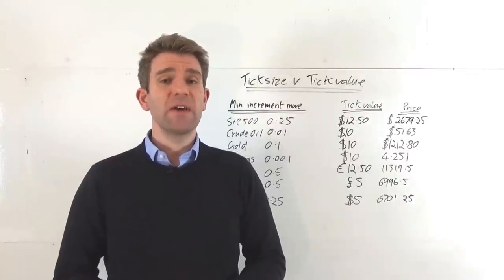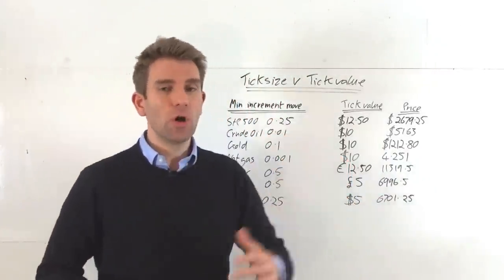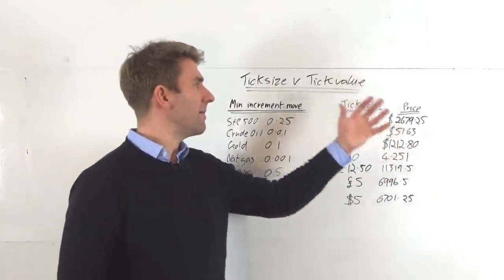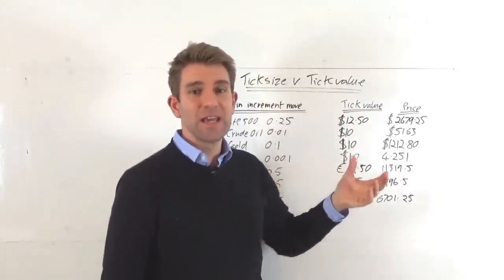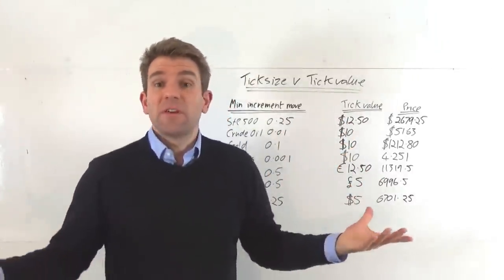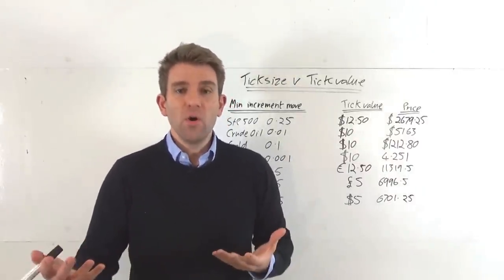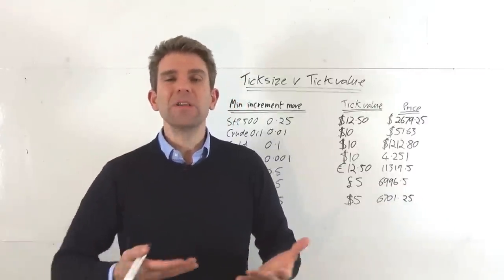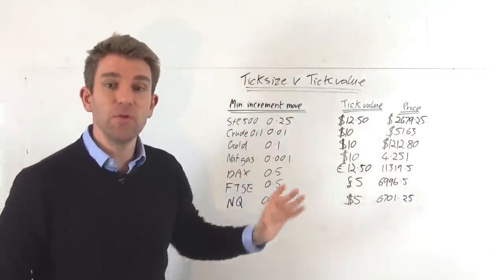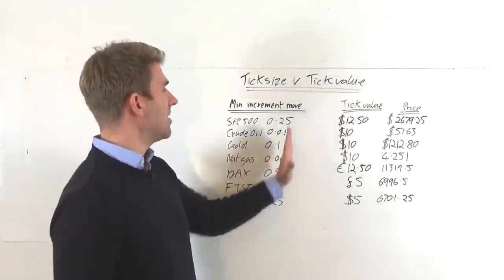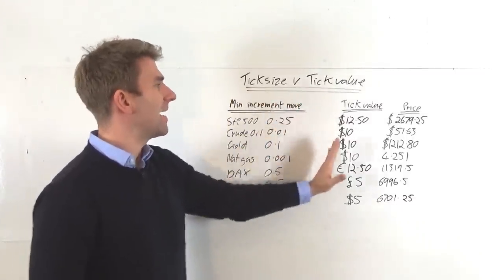This one's for you futures traders out there — day traders, swing traders, doesn't really matter. When we're trading a futures contract, there's sometimes a little bit of ambiguity between tick size and tick value. They're two distinct different things. As a beginner you can get it wrong, because when you're starting out you could trade the contract, look at the contract, see what one contract is worth, and not really know what happens when it moves one increment. This isn't really a deep dive into futures per se — this is more of an explainer between the minimum increment move, which is our tick size, and our tick value.